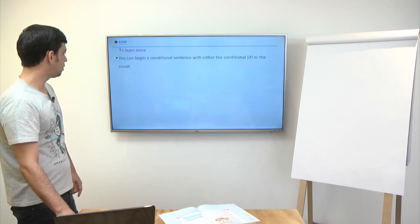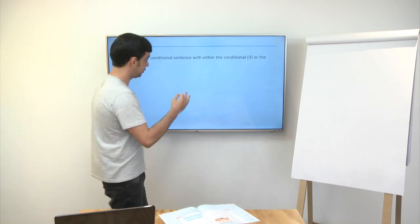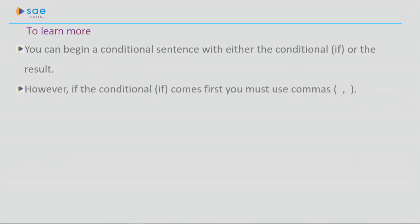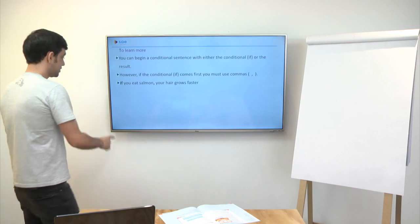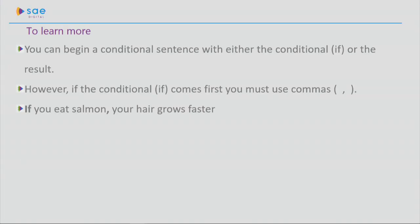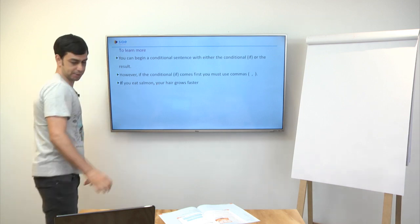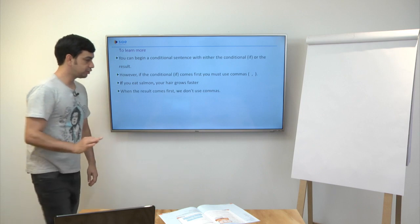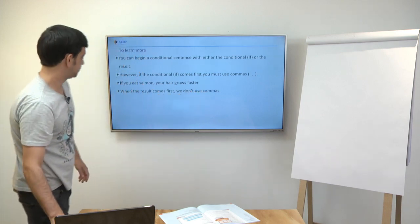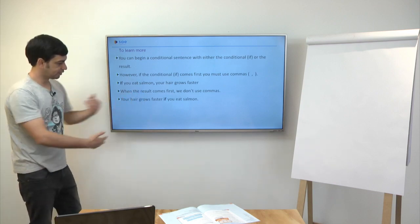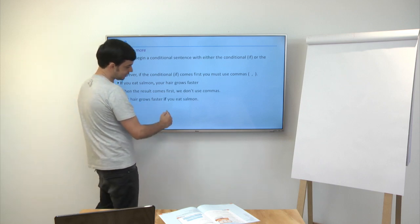Continuing here then, to learn more. You can begin a conditional sentence with either the conditional if or the result. However, if the conditional comes first, you must use commas. If I start my sentence, if the if is at the beginning of my sentence, the use of the comma is mandatory. For example, if you eat salmon, your hair grows faster. So the if appeared at the beginning of the sentence, the comma has to be present.